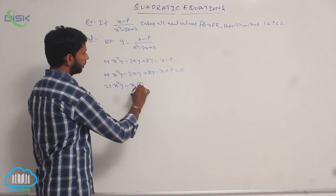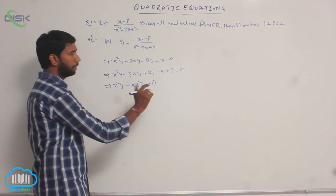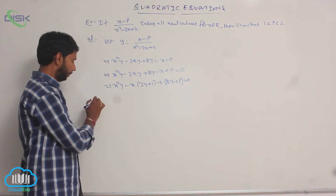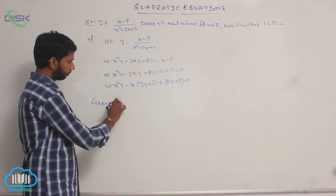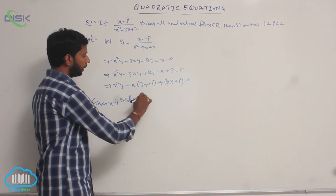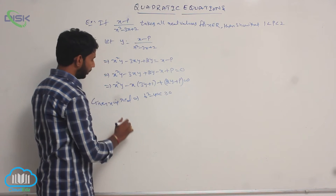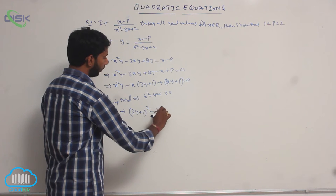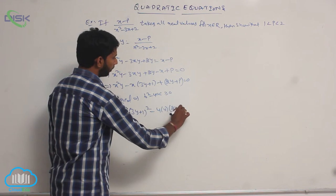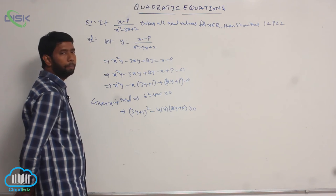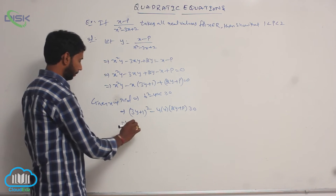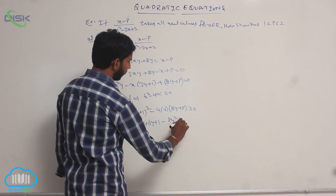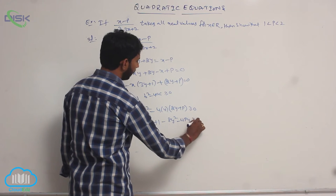Here, minus x is common. Grouping: x squared y minus x times (3y plus 1) plus (2y plus p) equals 0. Since x is real, the discriminant b squared minus 4ac must be greater than or equal to 0. Expanding: 9y squared plus 6y plus 1 minus 8y squared minus 4py is greater than or equal to 0.